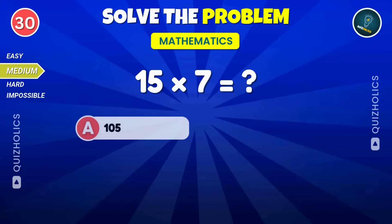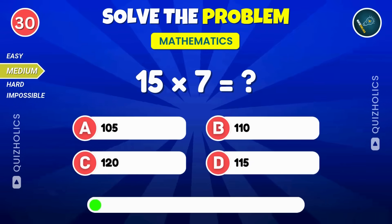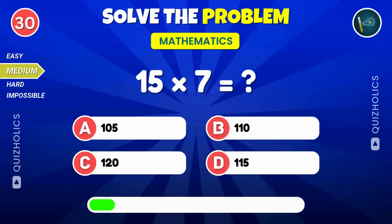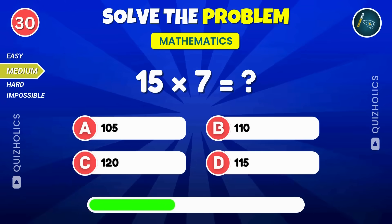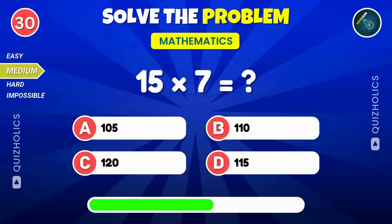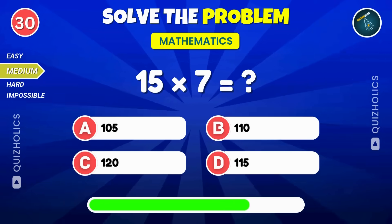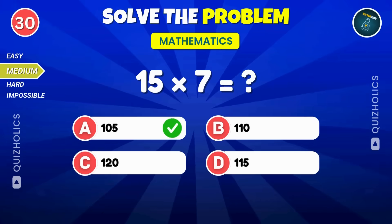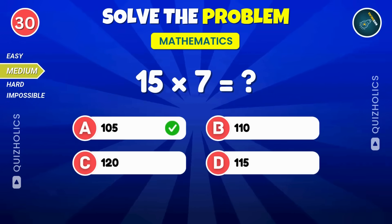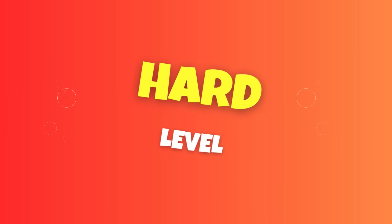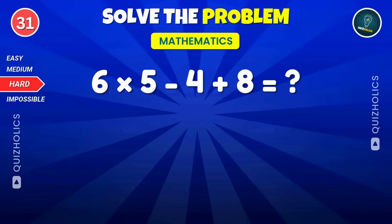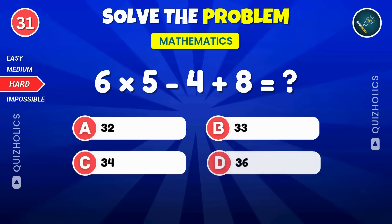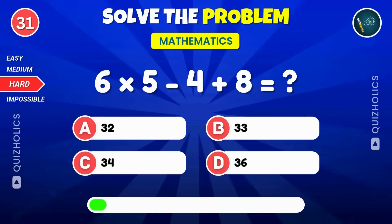How much is 15 times 7? Was that too easy? Don't worry, it's about to get harder. Here comes the hard level. Calculate 6 times 5, subtract 4, and add 8.